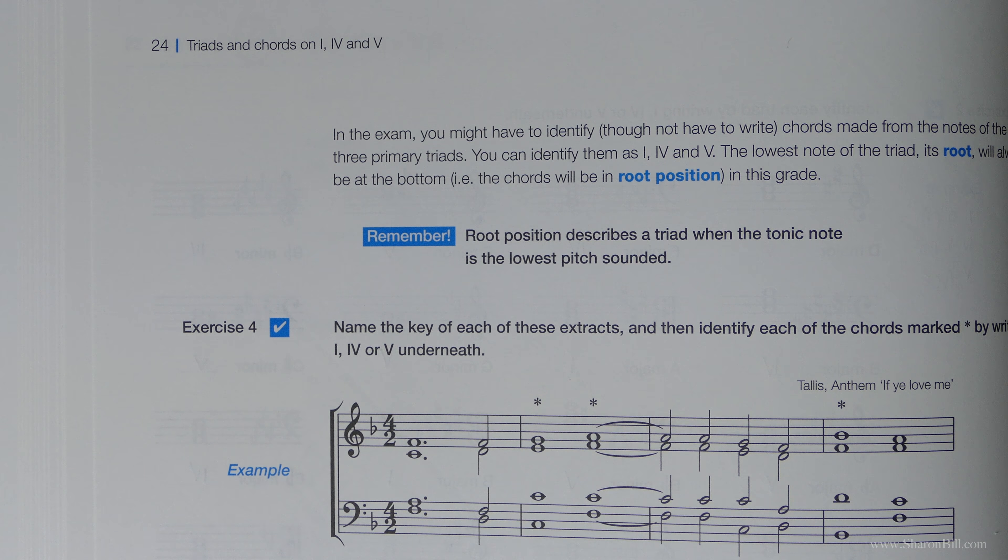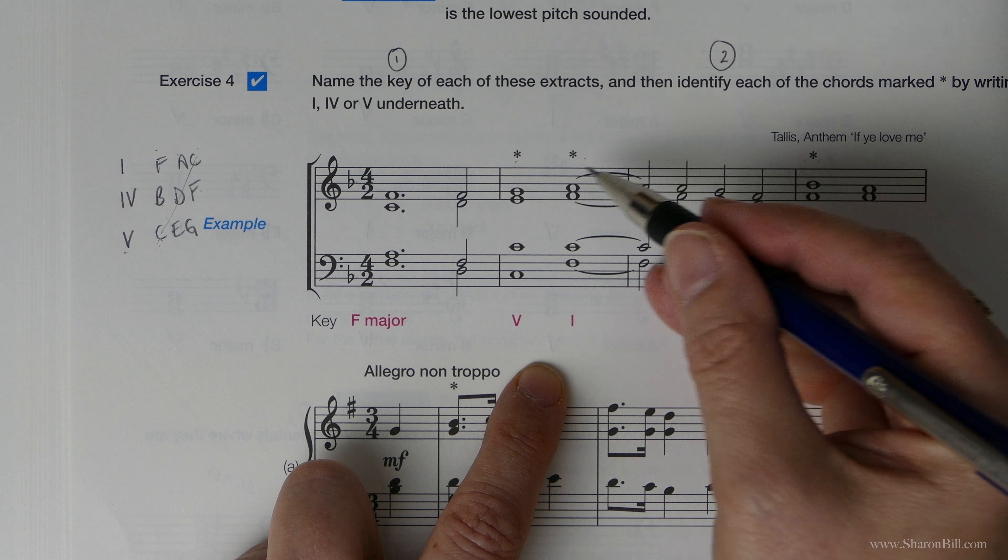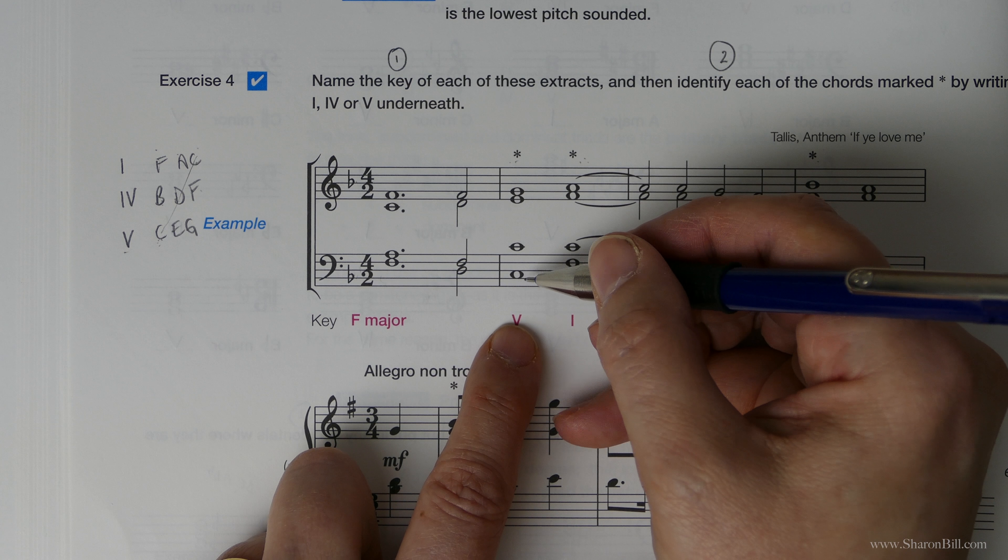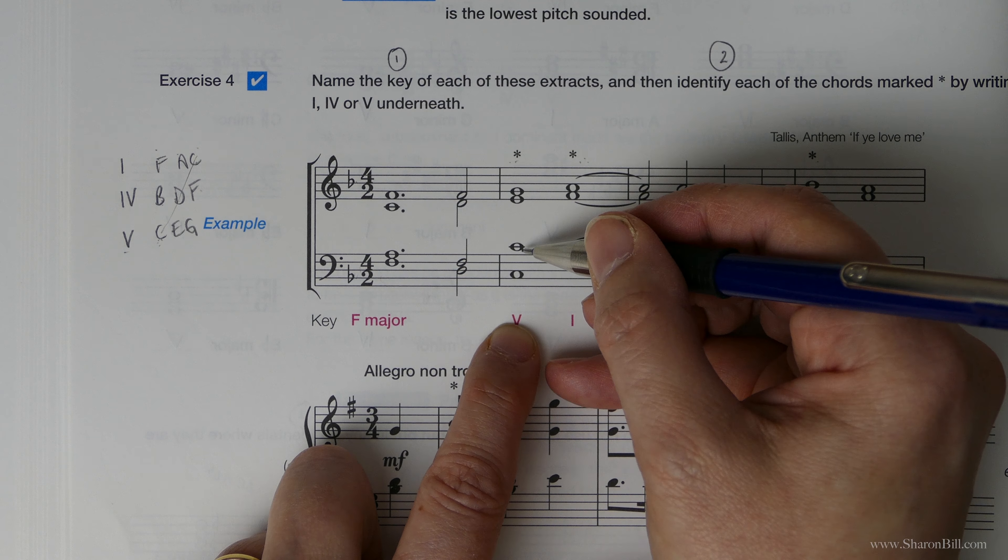And so if we know we're in F major, we need to identify these chords as marked. And we can read, we've got a C, a C, an E and a G. Therefore, we know it's chord 5. Here we've got an F, a C, an F and an A. So we know that it's chord 1. We've got a B, D, F, B. Of course it's flattened, but the key signature will take care of all of that. We don't need to worry about it. And we can see that that's chord 4.